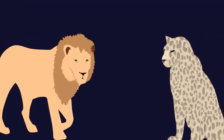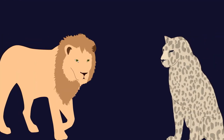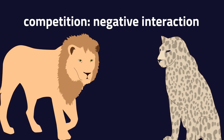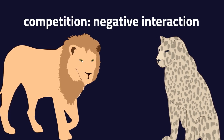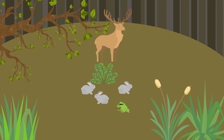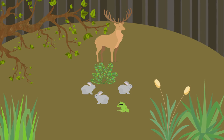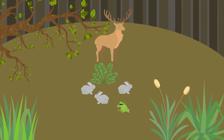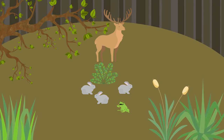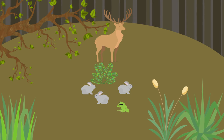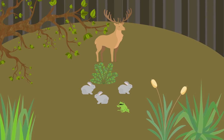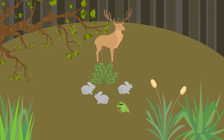Most competition between species, such as the leopard and the lion, is a negative interaction because they are competing for the same resources. Some interactions are neutral — they exist in the same ecosystem but do not compete for resources and neither predates on the other, such as rabbits, deer, and frogs all living in the same woodland.